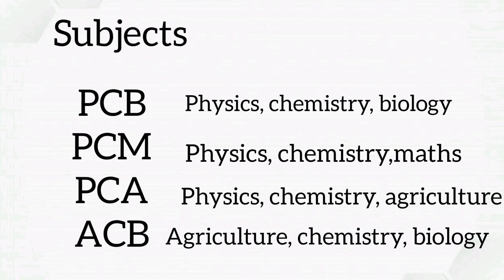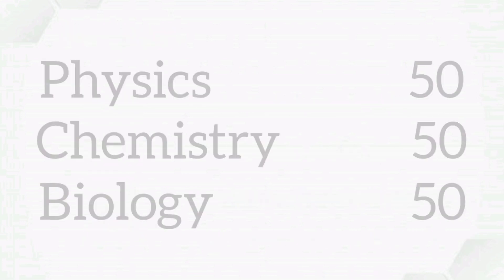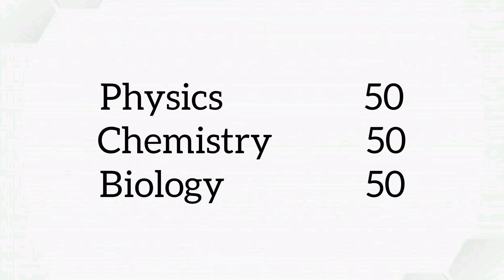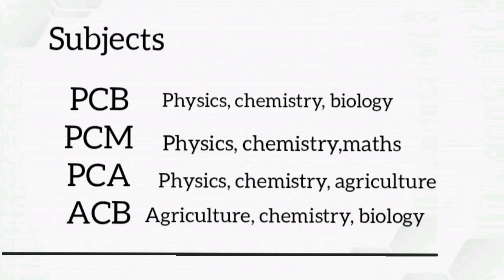For example, if you select section PCB — Physics, Chemistry and Biology — each subject will have 50 questions each, giving a total of 150 questions and maximum marks of 600. All candidates are required to select only 1 section out of these 4: PCB, PCM, PCA, and ACB.